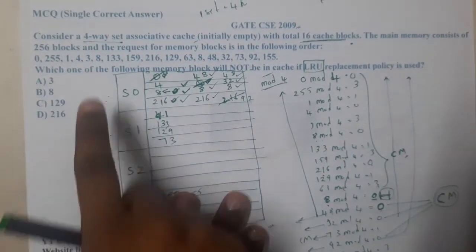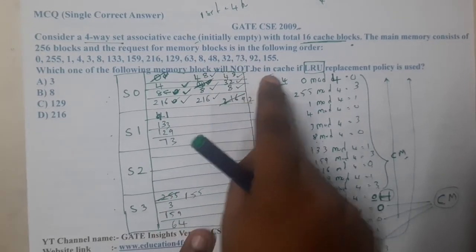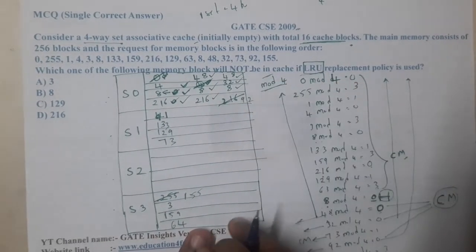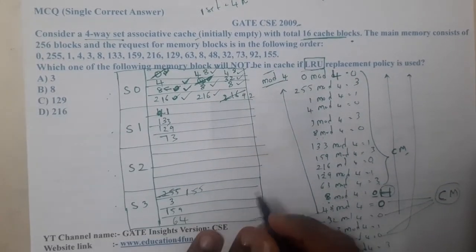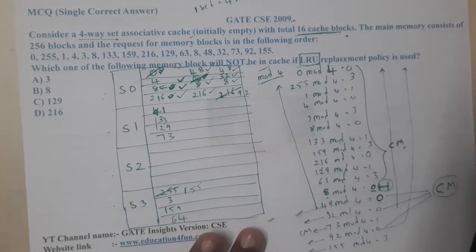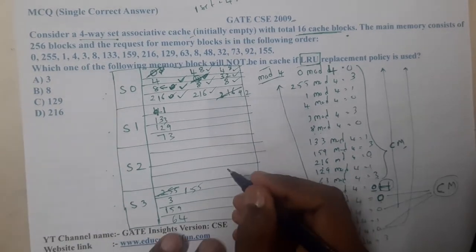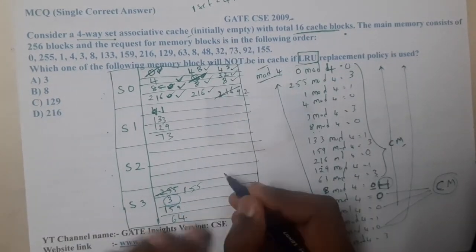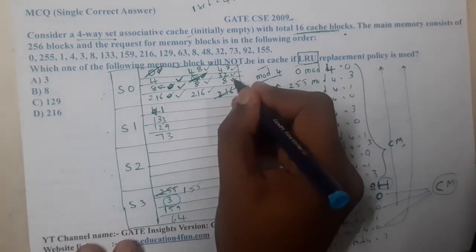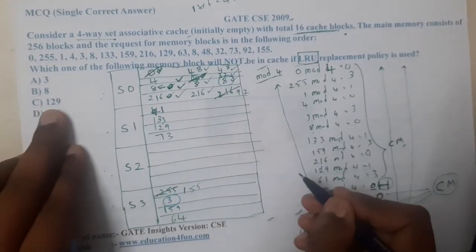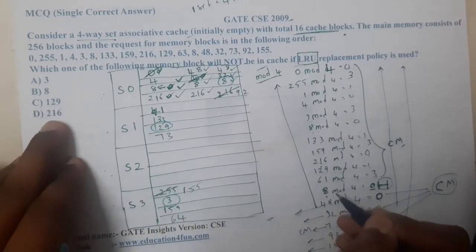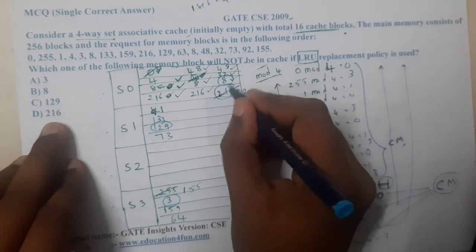Now the question is: which one of the following memory blocks will not be in LRU at the end? So is 3 in our list? Yes. Is 8 in our list? Yes. Is 219 in our list? Yes. Is 216 in our list? No. Hence, 216 will be the correct answer.